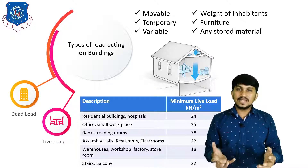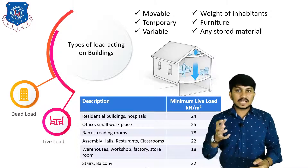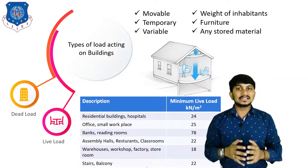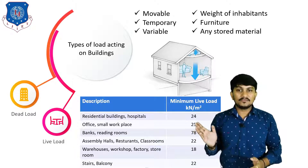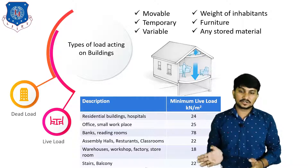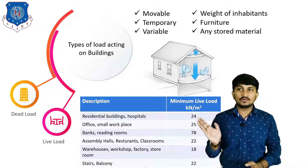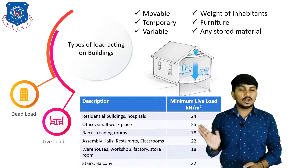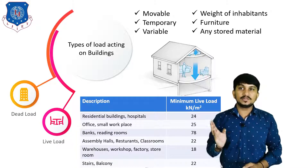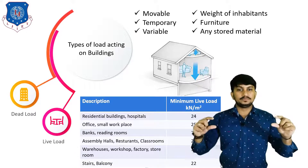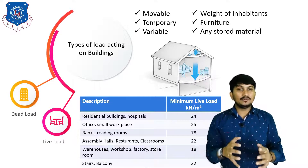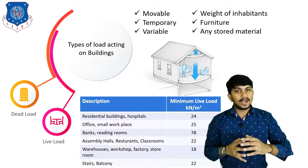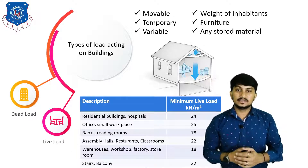Live load is calculated based on the type of building, using IS 875 Part 2. This code has a table with minimum live load considerations. For residential buildings and hospitals, we consider 2.4 kN/m² live load minimum. For offices and small workplaces, we consider 2.5 kN/m² live load on each slab, and so on. By this, we can find out the live load of the whole building and carry out structural analysis and design.